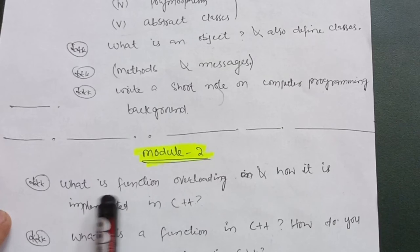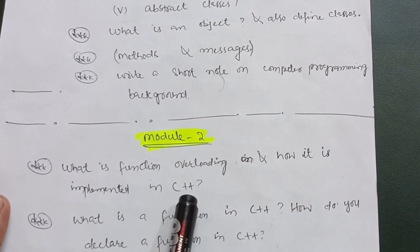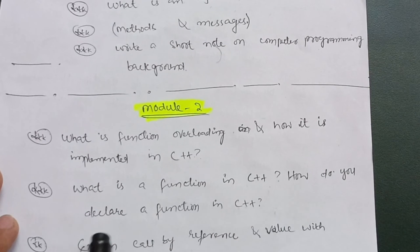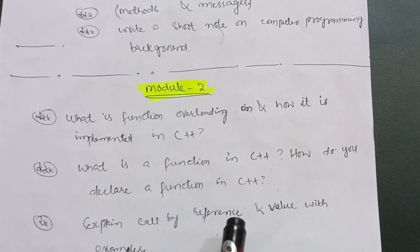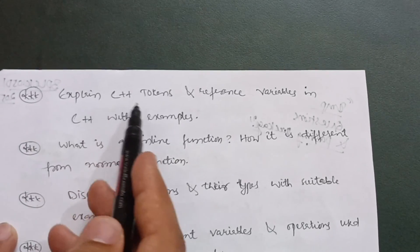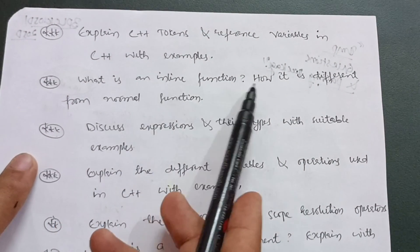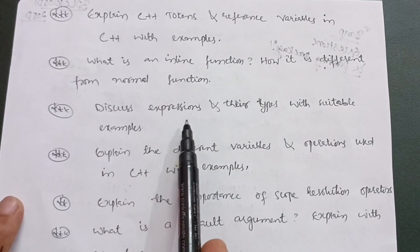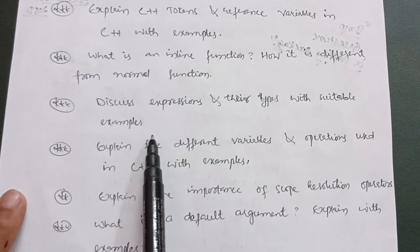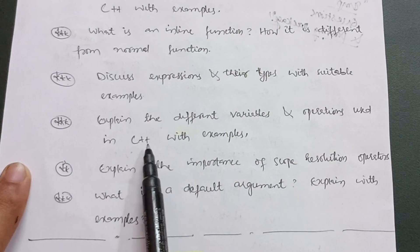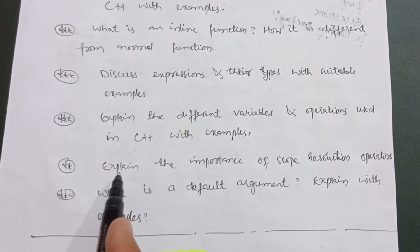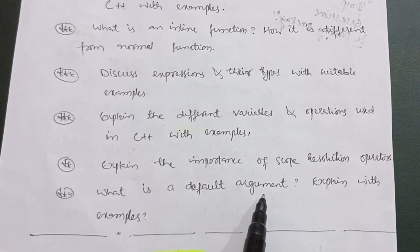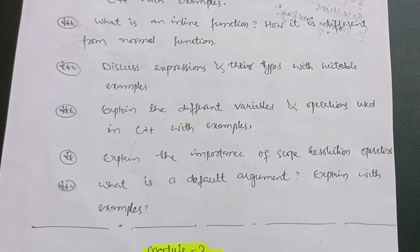Now, if you want to score, let me cover the other two modules. In Module 2, focus on: what is function overloading and how it is implemented in C++; how to declare a function in C++; explain call by reference and call by value with examples; explain C++ tokens and reference variables with examples; what is an inline function and how it differs from normal functions; discuss expressions and their types with suitable examples; explain different variables and operators used in C++; and explain the importance of scope resolution operator and default arguments with examples.